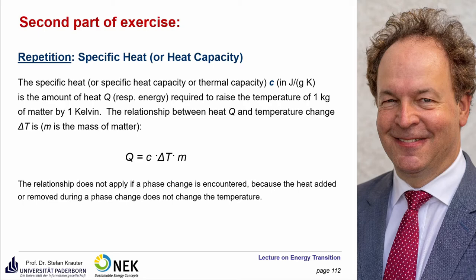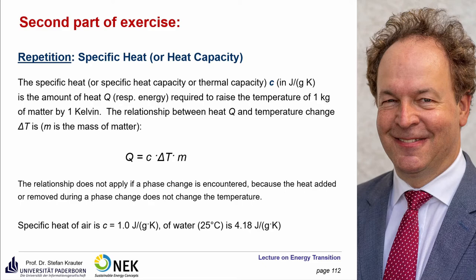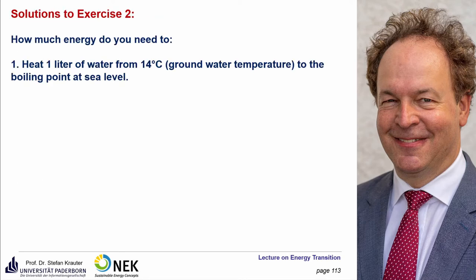We'll discuss that later because the heat added or removed during a phase change does not change the temperature. To give some examples: air has a specific heat of 1 joule per gram Kelvin, and water has a specific heat of 4.18 joule per gram Kelvin. So the question is: how much energy do you need to heat one liter of water from 14 degrees Celsius — that's groundwater temperature — to the boiling point at sea level, which is 100 degrees Celsius?